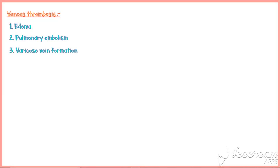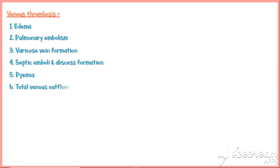Manifestations of venous thrombosis include edema and swelling, pulmonary embolism, varicose vein formation, septic emboli and abscess formation, pyemia, and — if total venous outflow obstruction occurs — venous infarction. However, venous infarction is very rare because of the presence of collateral connections.